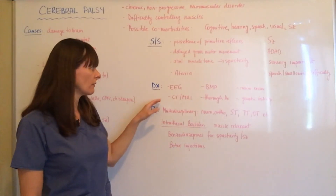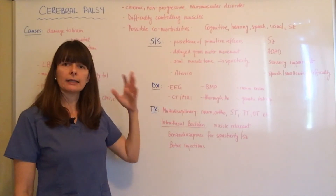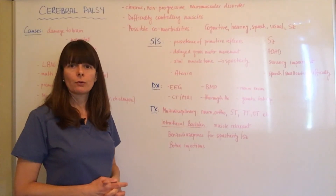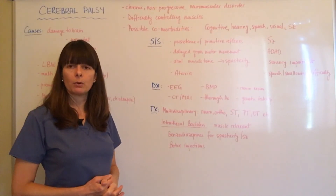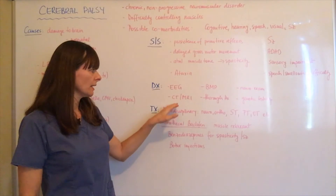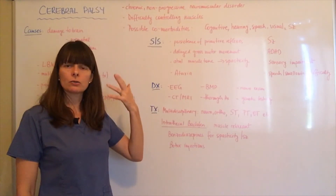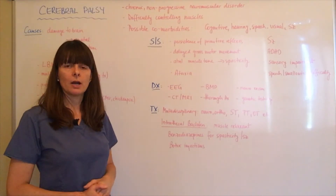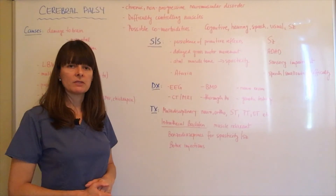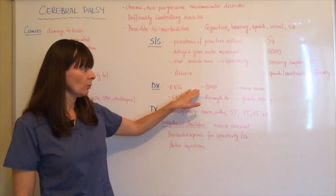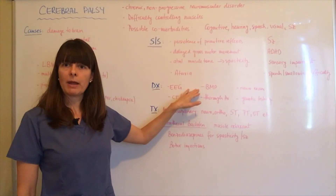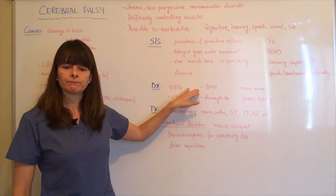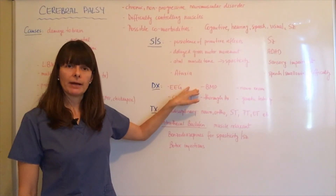Diagnostic testing always involves EEG to see the brain waves and measure how communication is happening from one side of the brain to the other once that impulse is received. CT and MRI imaging studies of the brain check for any underlying causes — maybe tumors, malformations, or signs of abnormal development. A BMP is also done to check basic electrolyte panels, because certain electrolytes are in charge of muscle control, and an abnormality there might be the cause.